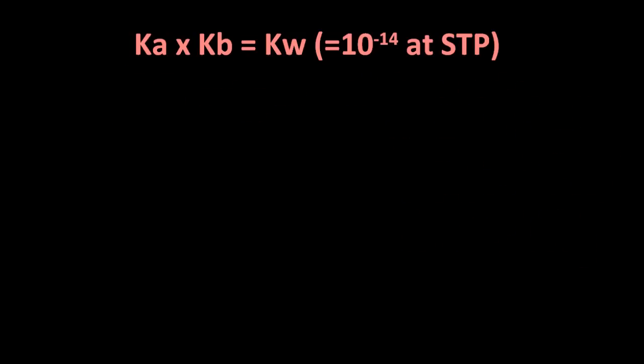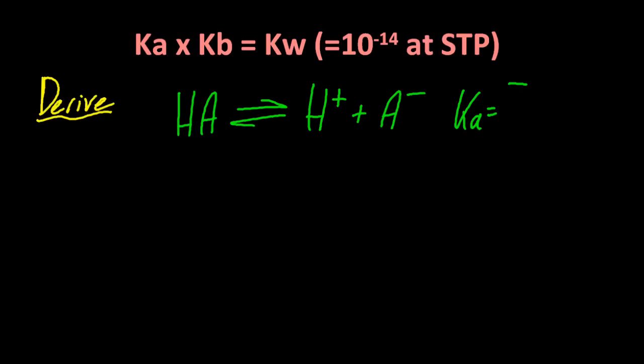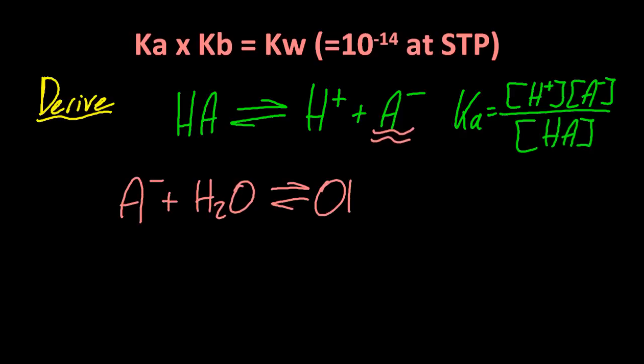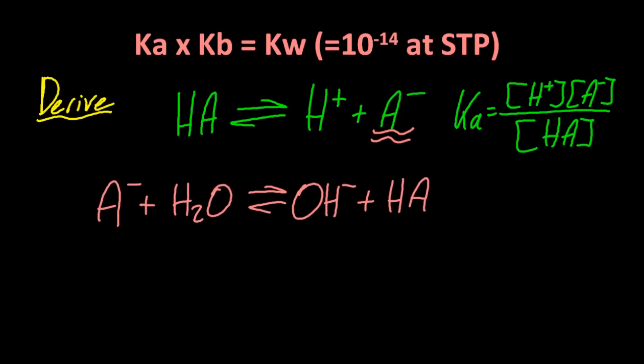Let me try to derive this equation for you. So starting off with the weak acid, HA, that's a dissociation. Let's take that conjugate base now, and do the dissociation for that as well.